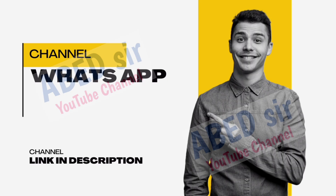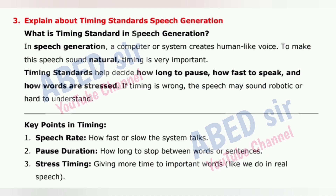Next important short question 3: Explain about timing standards in speech generation. In speech generation, a computer or system creates human-like voice. To make this speech sound natural, timing is very important. Timing standards help decide how long to pause, how fast to speak, and how words are stressed. If timing is wrong, the speech may sound robotic or hard to understand. Key points: 1. Speech rate — how fast or slow the system talks. 2. Pause duration — how long to stop between words or sentences.